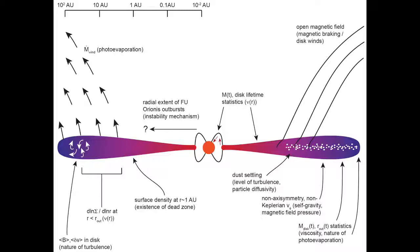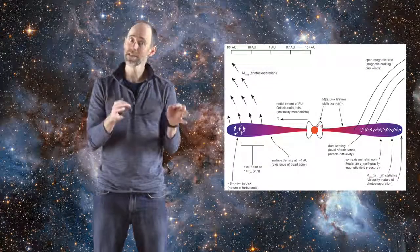Disks themselves are complicated objects. There's a lot of physical processes going on, and we're not going to talk about the details here. Suffice it to say that they're complicated, and understanding their structure is key for understanding where planets are forming.